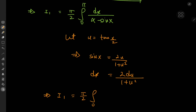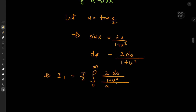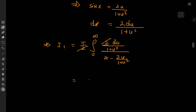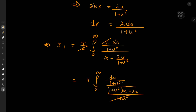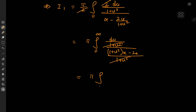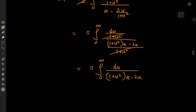As x approaches 0, u = tan(0) = 0, and as x approaches π, u approaches tan(π/2) = +∞. So I₁ becomes π/2 times the integral from 0 to ∞ of [2du/(1 + u²)] divided by [α - 2u/(1 + u²)]. After cancellation and simplification, this gives π times the integral from 0 to ∞ of du divided by [(1 + u²)α - 2u]. Factoring out α gives the denominator as 1 + u² - 2u/α.